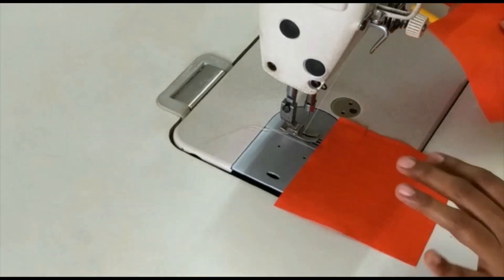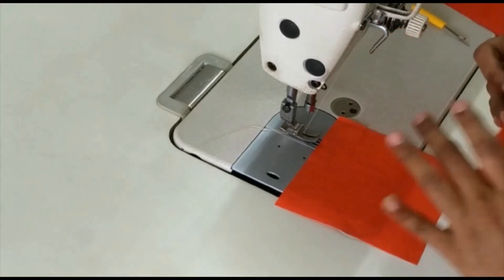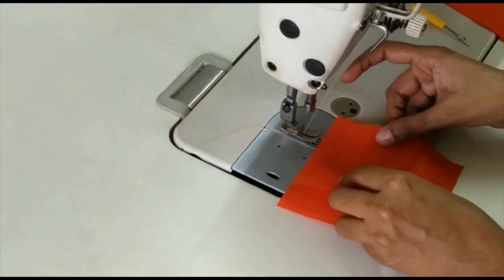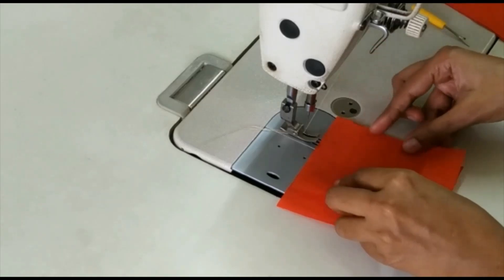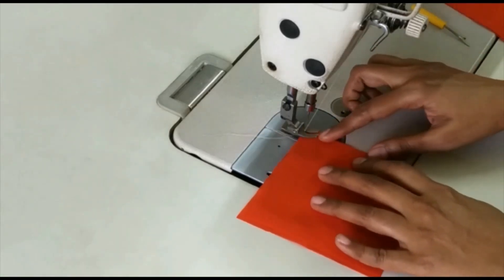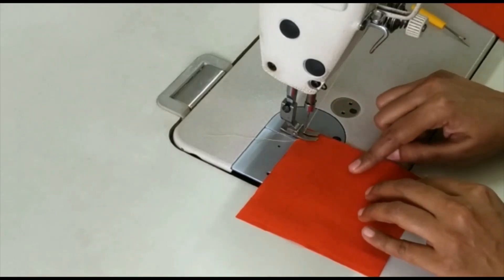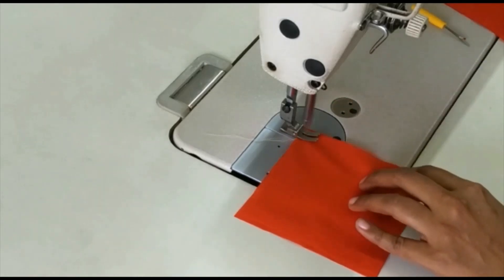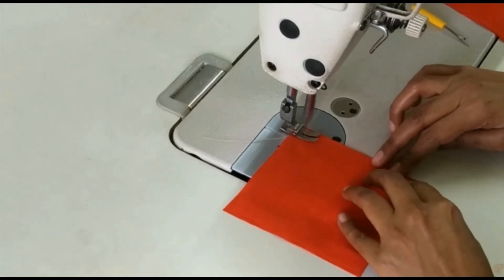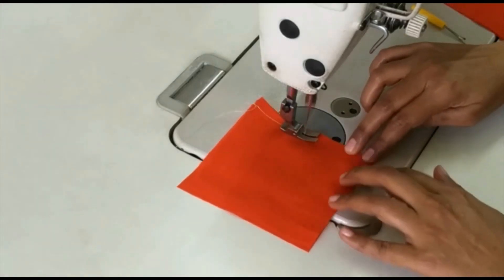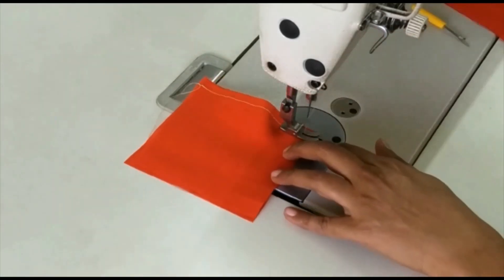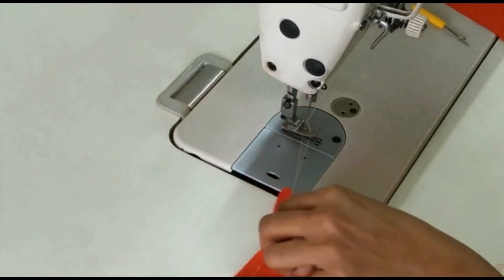Take two pieces of fabrics, right on right, facing each other. Make a stitch on the wrong side. Here I am using contrast color thread for easy understanding. When you stitch, use the same color matching to the fabric. This stitch is commonly used in all the garments to attach two fabrics.